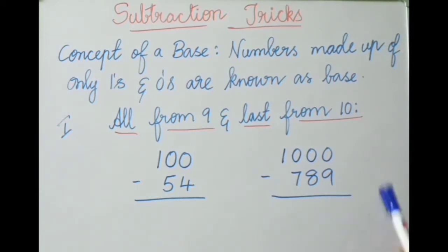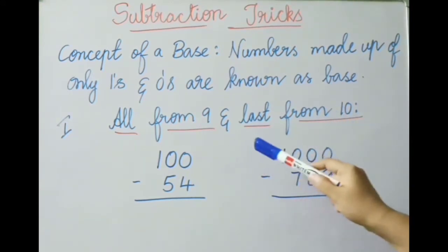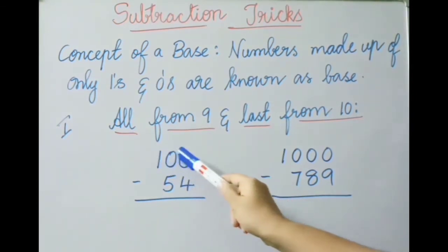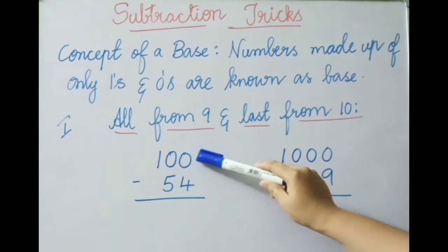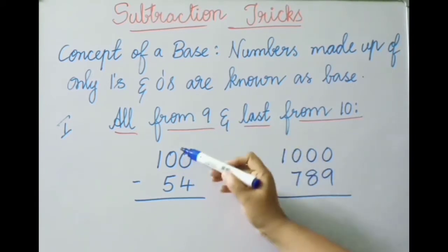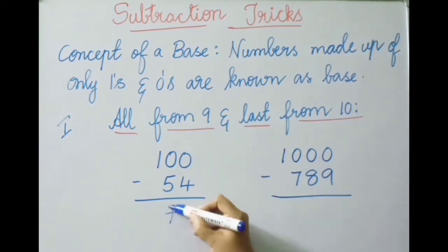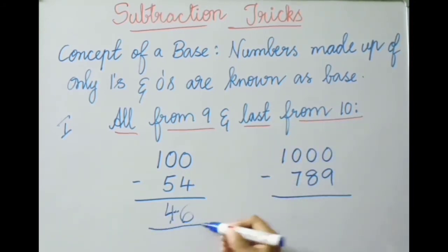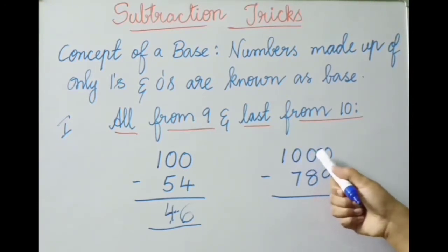Let us see the first method: 'All from nine and last from ten.' Whatever numbers are present, you subtract all from nine and the last number from ten. For example, hundred minus 54: nine minus five is four, ten minus four is six, so the answer is 46. Next example: thousand minus 789. These two we subtract from nine, and the last from ten: nine minus seven is two, nine minus eight is one, ten minus nine is one, so the answer is 211.